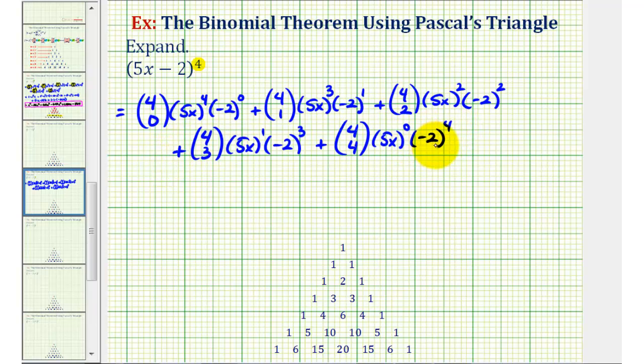So we've now applied the binomial theorem, so the next step is to simplify each term in the expansion. And as mentioned earlier, to evaluate the combinations, we're going to use Pascal's triangle.